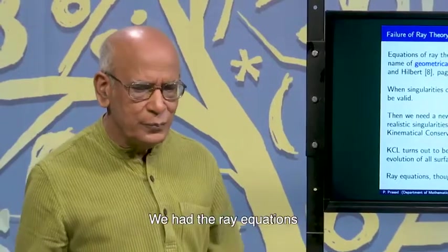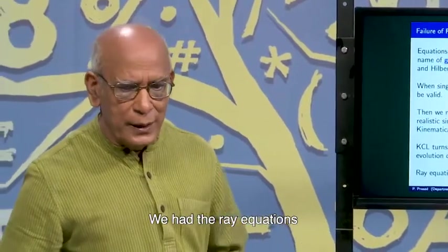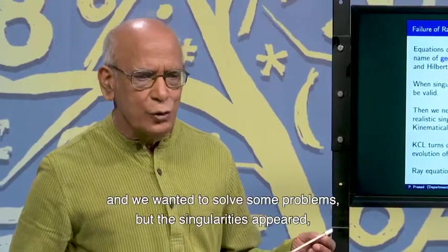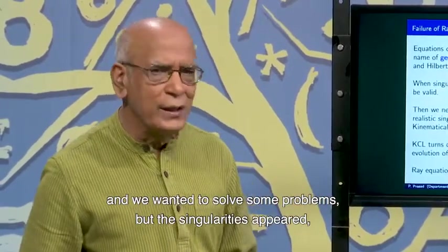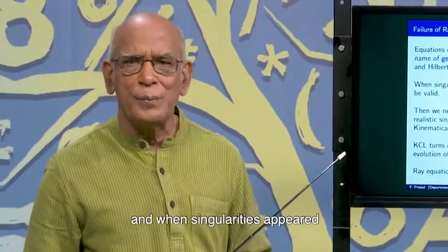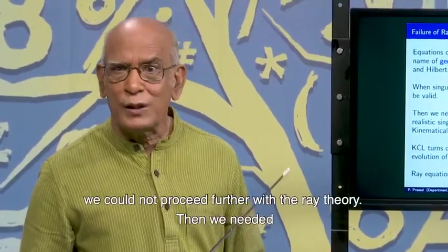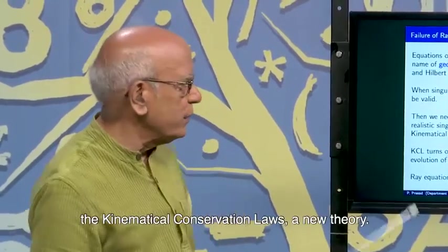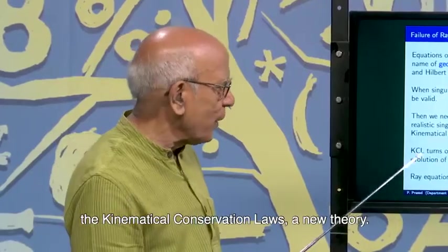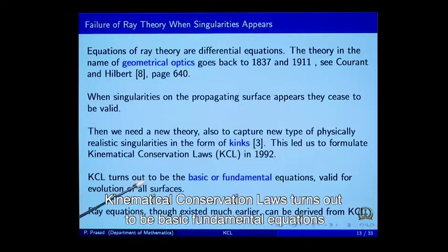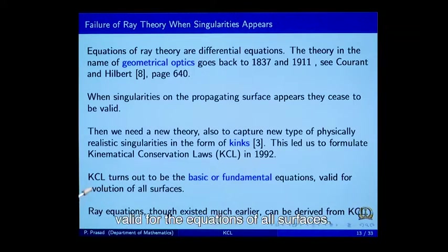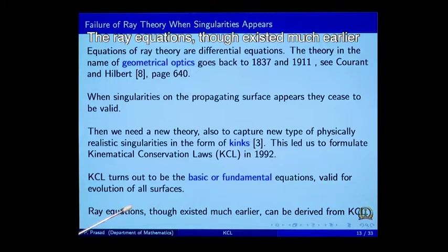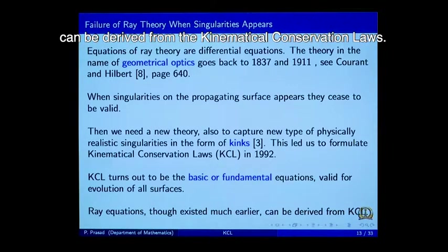We had the ray equations and wanted to solve some problems, but singularities appeared. When singularities appear, we could not proceed further with the ray theory, and we needed the kinematical conservation laws — a new theory. Kinematical conservation laws turn out to be basic fundamental equations for the ray equations. The ray equations, though they existed much earlier, can be derived from the kinematical conservation laws.